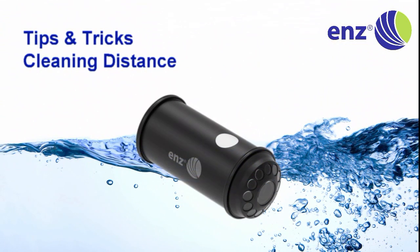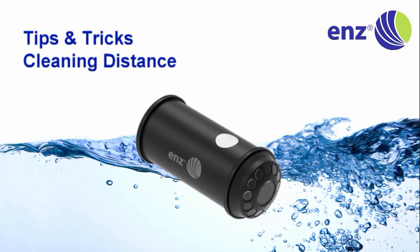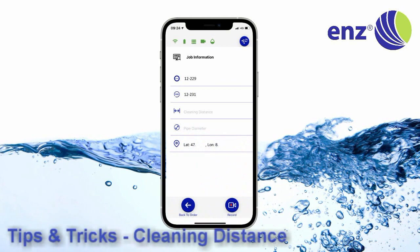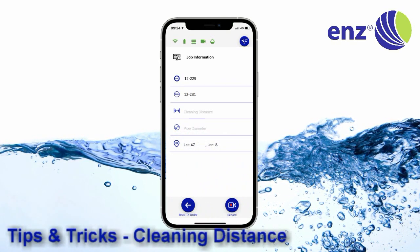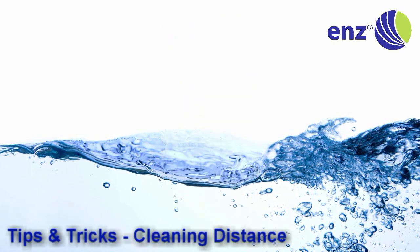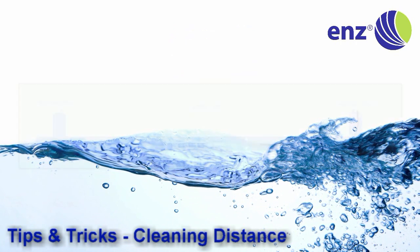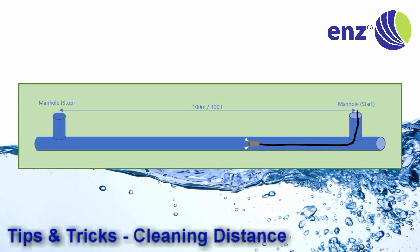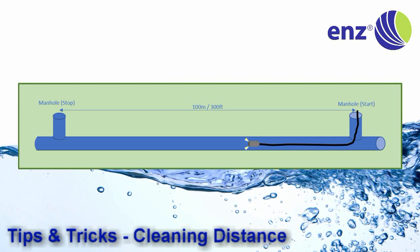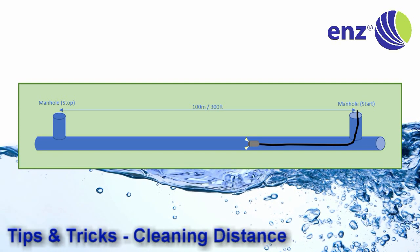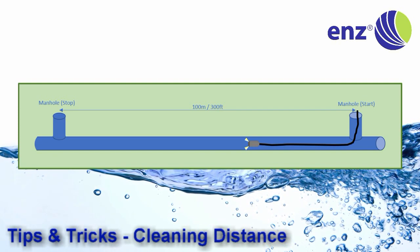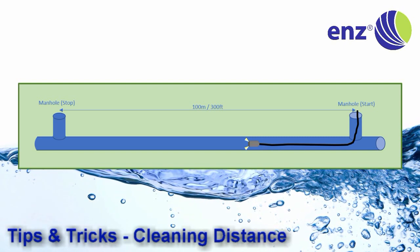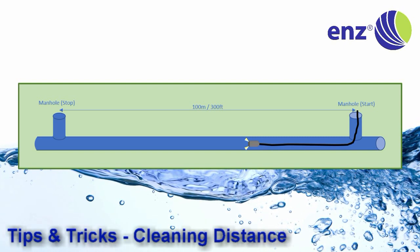To display the cleaning distance in the subtitle, enter the known distance between the manhole start and stop in the field cleaning distance in meters or feet. During the cleaning process, completely release the hose pressure for at least 3 seconds when you approach the stop manhole. Then pull the nozzle back with a constant speed and directly stop the video when the nozzle camera is back at the start manhole. The measurement can deviate by 10–20%.